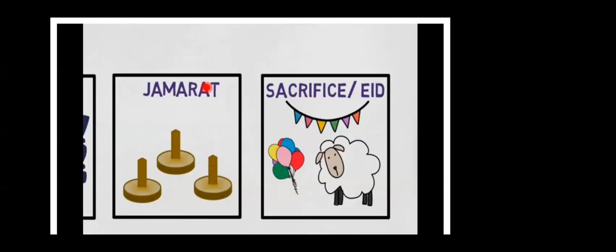After Mina, the pilgrims go to Arafat and seek forgiveness from Allah. Next is Muzdalifah — all the pilgrims spend the night at Muzdalifah. After that comes Jamra: these are three large walls that represent Shaitan. The pilgrims throw stones on each of the three Jamra walls.